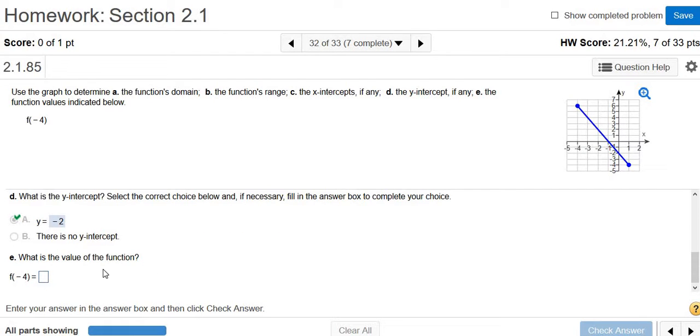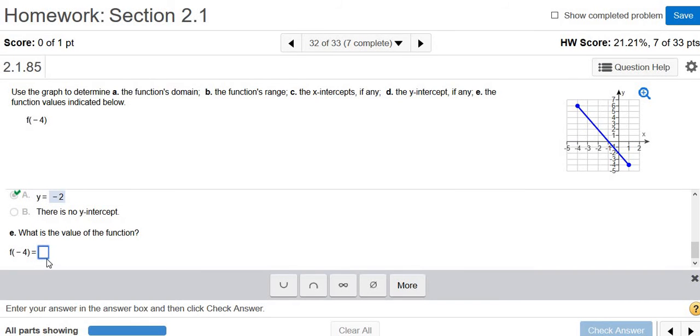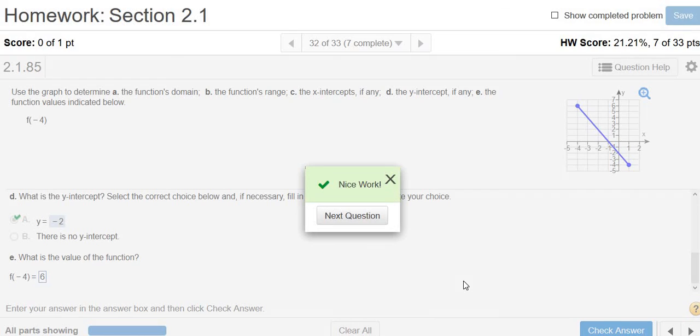What is the value of the function? It wants f of negative 4. That's the y value when x is negative 4. Here's negative 4, and the y value here is 6. So that's the answer, 6. Check answer. And that's it, I hope that helped.